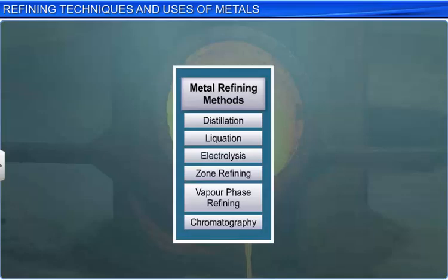Depending upon the nature of the metal and the impurity present, various refining methods such as distillation, liquation, electrolysis, zone refining, vapor phase refining and chromatography are used. Let's look at each one of these techniques in detail.